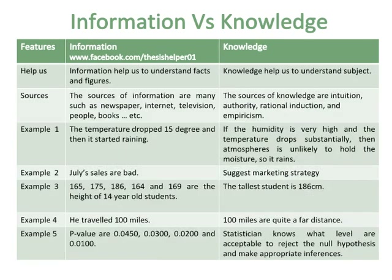Information helps us understand facts and figures, while knowledge helps us understand a subject. The sources of information are many, such as newspapers, internet, television, people, books, etc. While the sources of knowledge are intuition, authority, rational induction and empiricism.